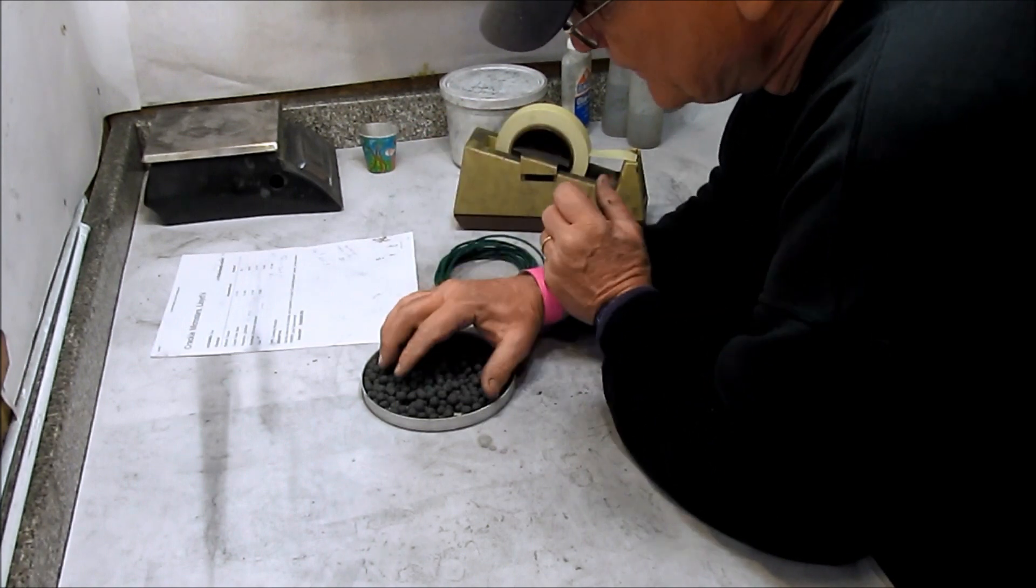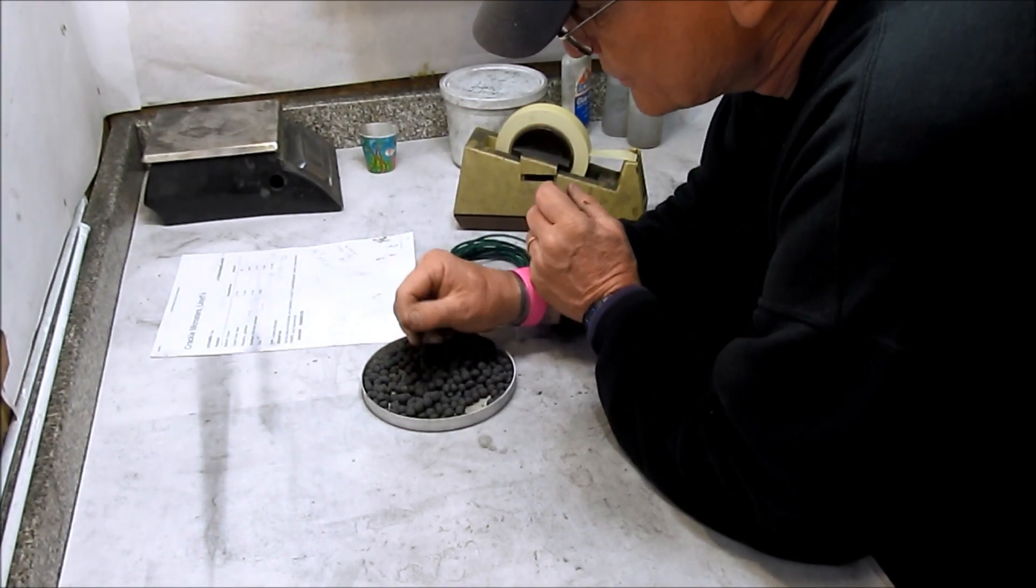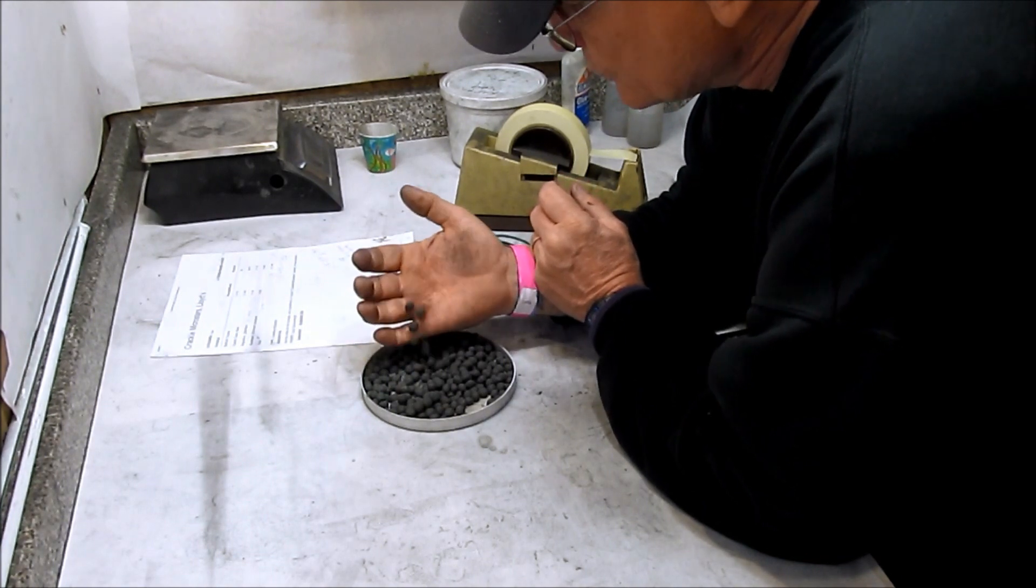Once the putty firmed up, I made a patty a little less than a quarter inch thick and cut it into quarter inch cubes.